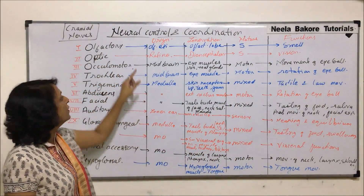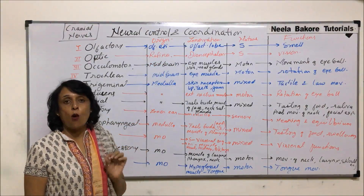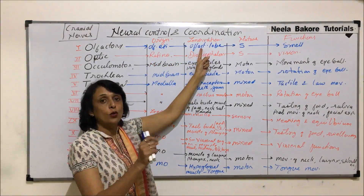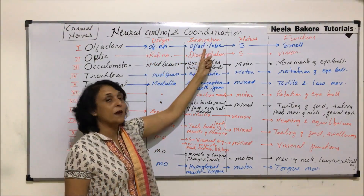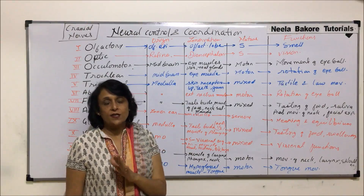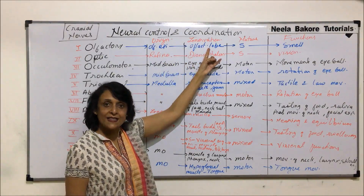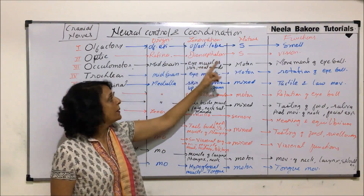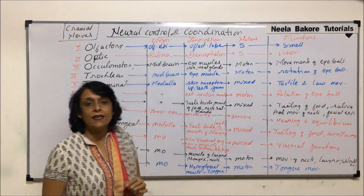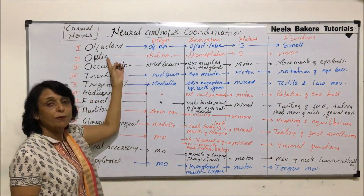The first one is olfactory. As we have seen, it is a sensory nerve. It arises from the olfactory epithelium of our nose and then it goes to the brain, especially to the olfactory lobes. It is a sensory nerve starting from the sense organ going to the CNS. The function is smell — it helps us detect smells.